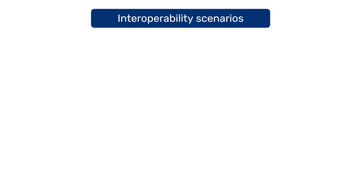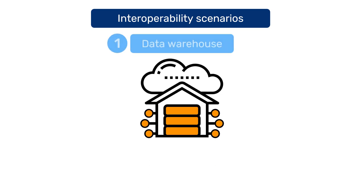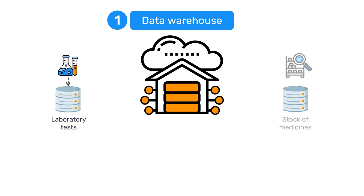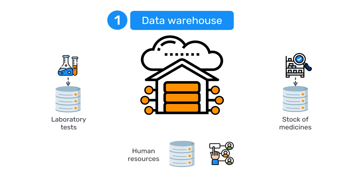One of the most common DHIS-2 interoperability scenarios is using DHIS-2 as a data warehouse. For example, one country uses a software system that records and stores the results of laboratory tests used to detect tuberculosis cases. Another system manages the stock of medicines in the facilities and alerts supply chain managers when there is a stock shortage. A third system collects human resource data to help manage and allocate health center staffing.